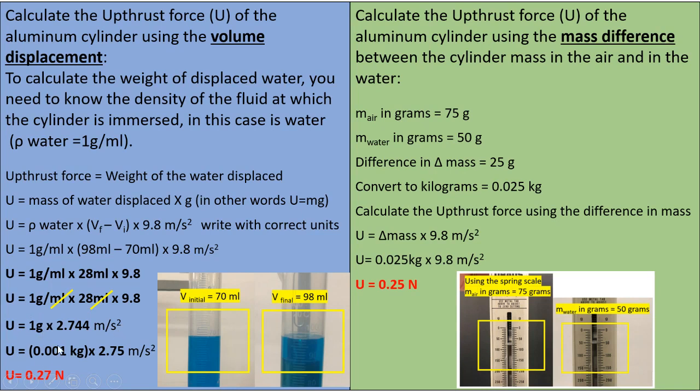Now we need to convert the grams to kg. So 1 gram is 0.001 kg times 2.75 m per second squared. Multiply those two numbers, you should have 0.27 newtons approximately.